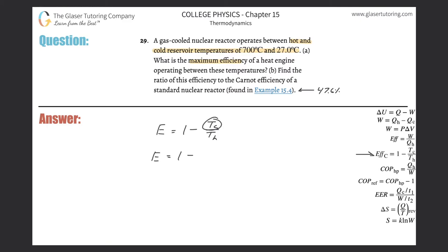The temperature of the cold reservoir here is going to be 27 degrees Celsius. You gotta take 27 and then add the 273 to that. Divide it then by the hot reservoir, which is 700 degrees Celsius, and you gotta add 273 to that.